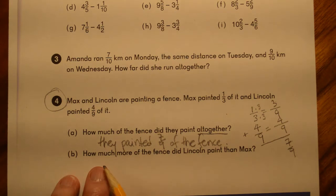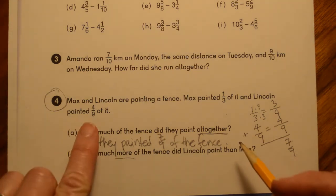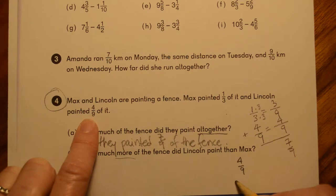The next question, how much more of the fence did Lincoln paint than Max? So when you see how much more than, hopefully you're realizing that we need to find a difference between the two of them. So we're going to take the larger one, which is the four ninths, and we're going to subtract the smaller one, which is the one third.